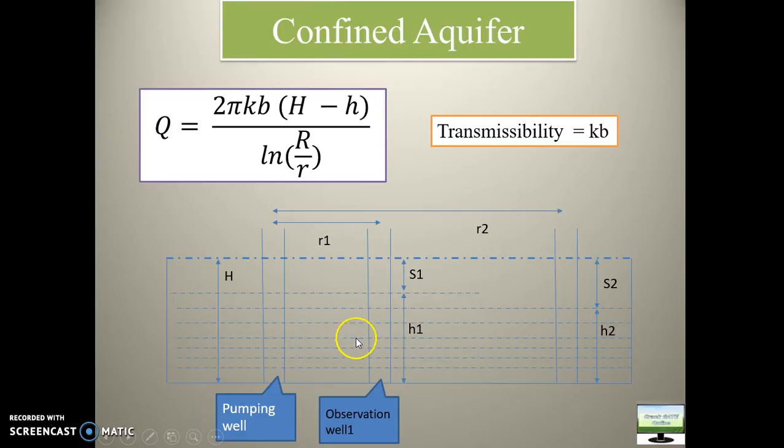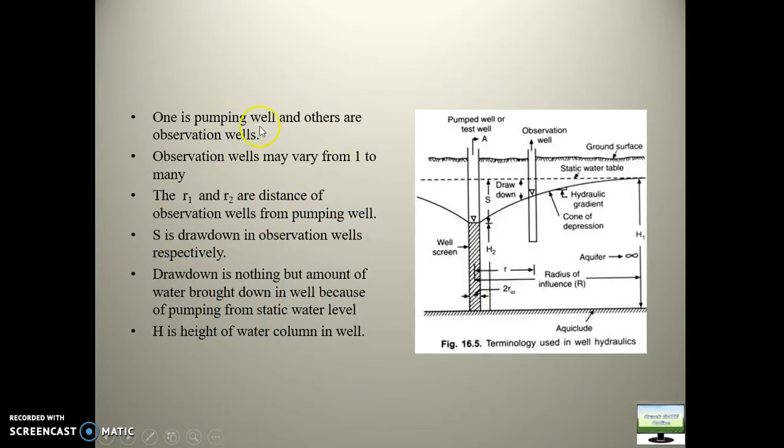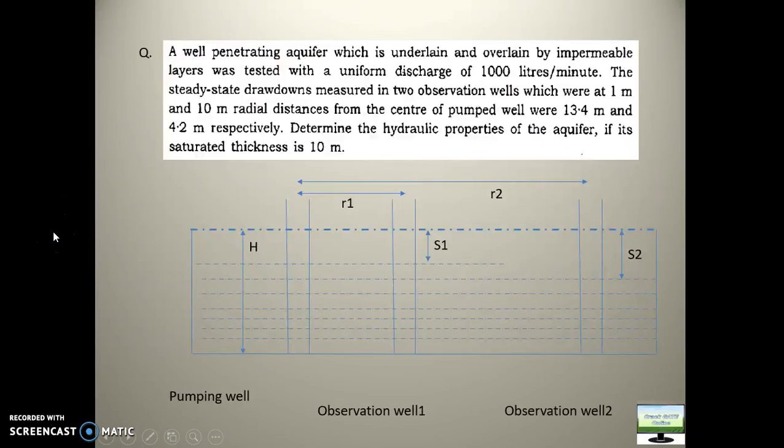So now, as I told you this is pumping well, this is observation well 1 and this is observation well 2. So please keep this picture in your mind. I will show you in numerical problem how you will apply this formula. Now, whatever I said, same if it is written here, you can pause and study. So see, initially water level was this, because of pumping it came like some conical shape. So this total radius is known as the radius of influence.